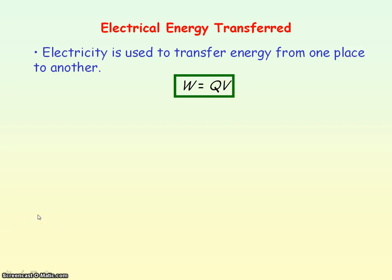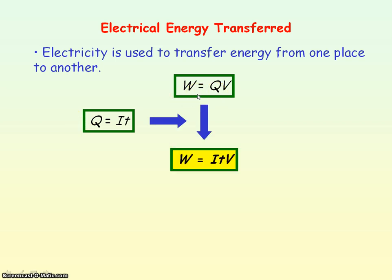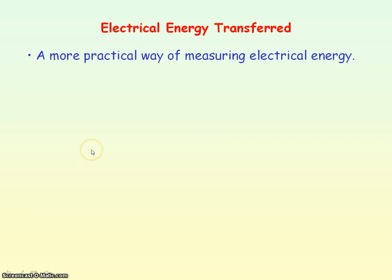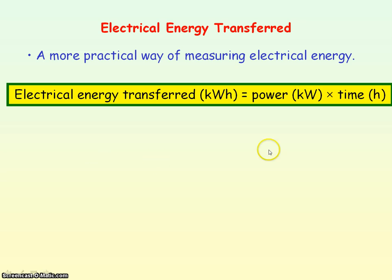Remembering that current is the rate of flow of charge, we can say the charge Q is equal to the current times the time it is flowing for: Q = It. Substituting this into our electrical energy equation gives us E = IVt — current times time times voltage. When using this equation all quantities must be in SI units: current in amperes, time in seconds, and voltage in volts, which gives electrical energy in joules.